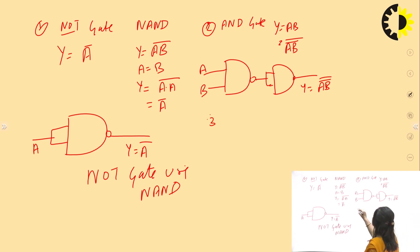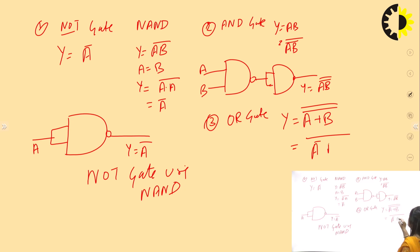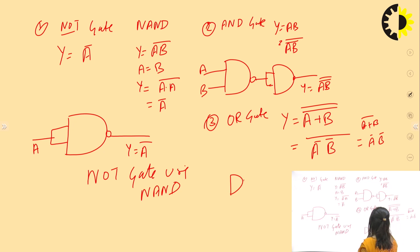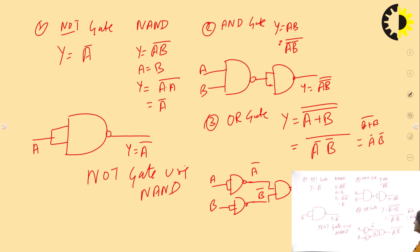For the OR gate, the expression is Y = A + B. We apply double inversion, giving Y = ((A + B)̄)̄. Using De Morgan's theorem, (A + B)̄ = Ā·B̄. So we can design it using NAND gates: A and B each pass through NAND NOT gates (inputs shorted), then combine through a NAND gate. This is how we design OR gate using NAND.